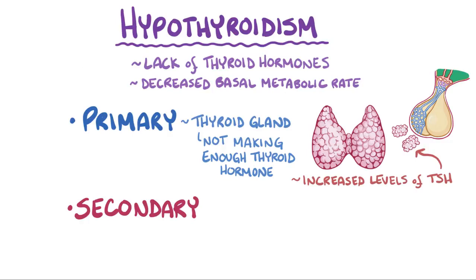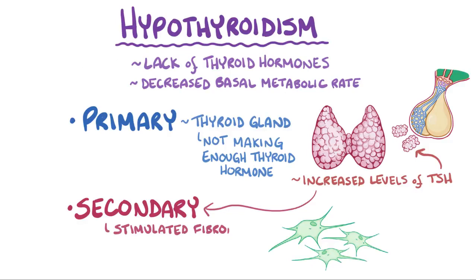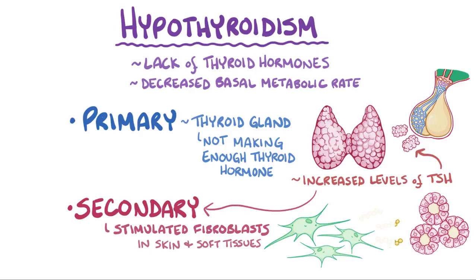A secondary effect of the high levels of TSH is that it stimulates fibroblasts in the skin and soft tissue. The stimulated fibroblasts start depositing glycosaminoglycans, which are extracellular matrix proteins, into the interstitium, which is the space between cells.